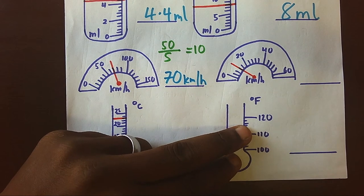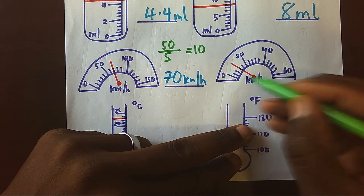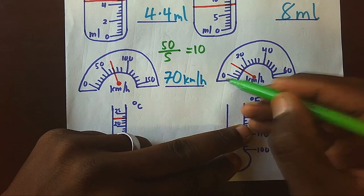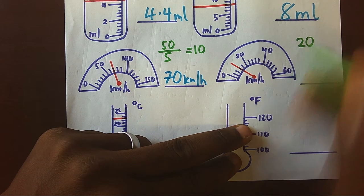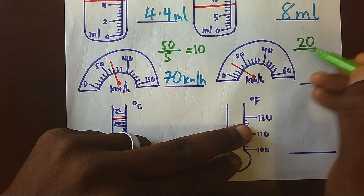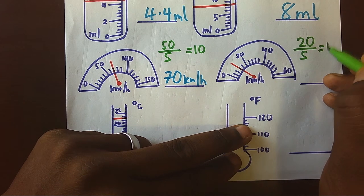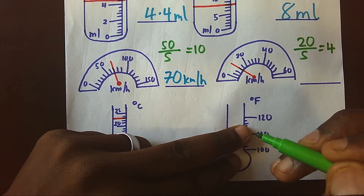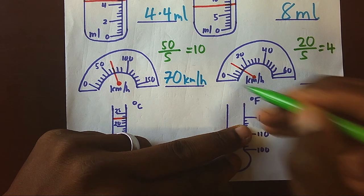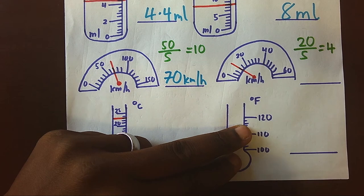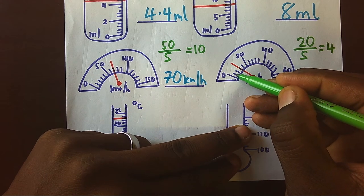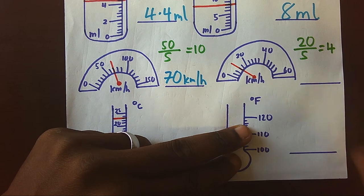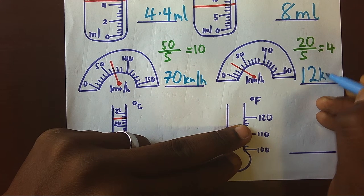Now when you come to this other smaller one, this could be perhaps a motorcycle, that's why it has only zero, 20, 40, and 60. But you can see the gap is 20, but still each gap is only five. Hence for each gap we shall have four. Zero, four, eight, twelve, sixteen, twenty. But now we shall stop at four, eight, twelve. It will be reading at 12 kilometers per hour.